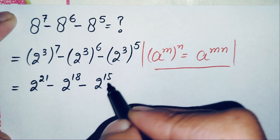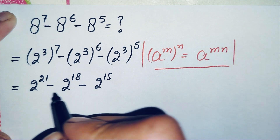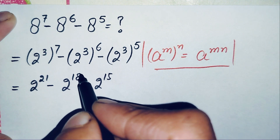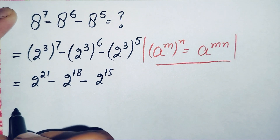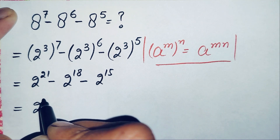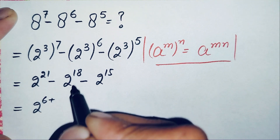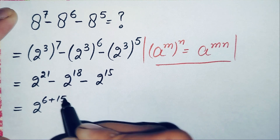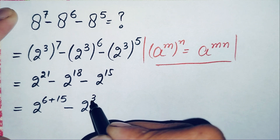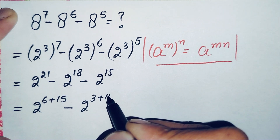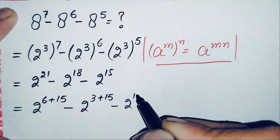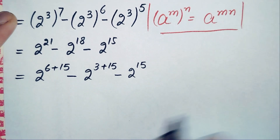Now, looking at the power 15 in the last term, we will try to make this power of 15 appear in the other two terms as well. So we do some changes: we write 21 as the sum of 6 plus 15, and 18 as the sum of 3 plus 15, while 15 stays the same.